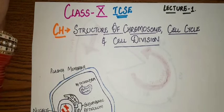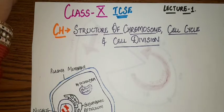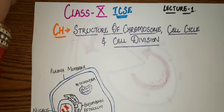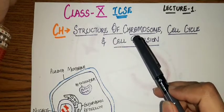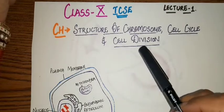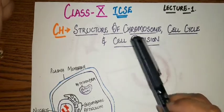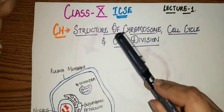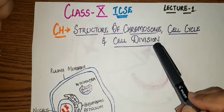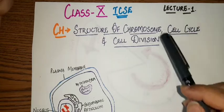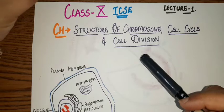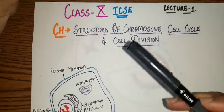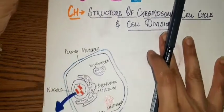Hello students, today we are going to discuss the first chapter of ICSE 10th standard, that is the structure of chromosome, cell cycle and cell division. Before discussing about the structure of chromosome, how the cycle happens in the cell and how a cell divides itself, let us just have a quick brief discussion about the cell.